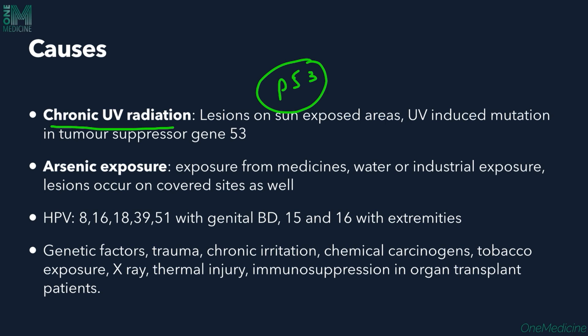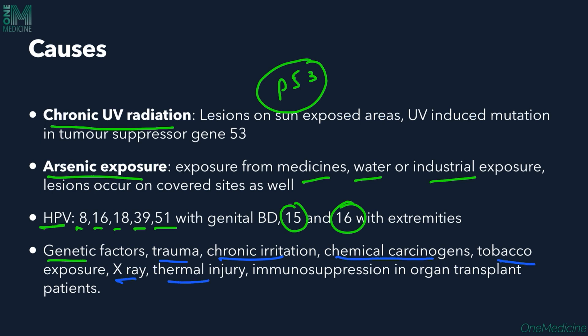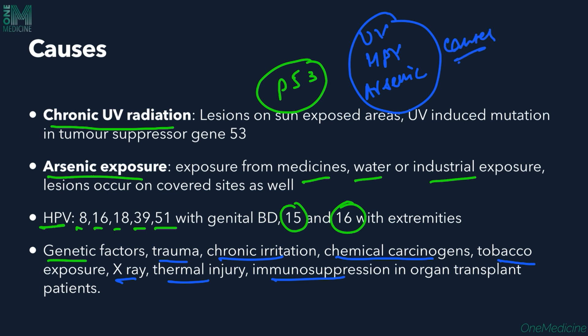Arsenic exposure can come from medicines, water, or industrial sources, and lesions can occur on covered sites as well. HPV types associated with genital Bowen's disease include types 8, 16, 18, 39, and 51, while types 15 and 16 are associated with extremity lesions. Other causes include trauma, chronic irritation, chemical carcinogens, tobacco, X-ray, thermal injury, and immunosuppression in organ transplant patients. The most important causes are UV rays, HPV, and arsenic exposure.